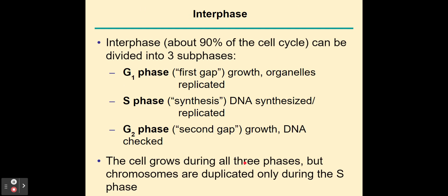Interphase is where the cell is most of the time — 90% of the time. Interphase is divided into three sub-phases. The first is G1, where G stands for gap phase. This is where the cell is growing and organelles get replicated, like mitochondria, endoplasmic reticulum, and lysosomes. The next phase is S-phase, where S stands for synthesis — what's being made is an extra copy of the DNA, so the DNA gets replicated. Then G2 is the second gap phase, where the cell continues growing and the replicated DNA gets double-checked for errors and repaired. The cell grows during all three phases, but chromosomes are duplicated during S-phase.